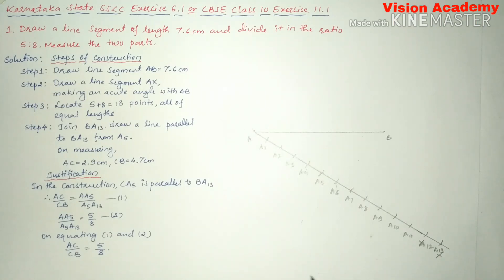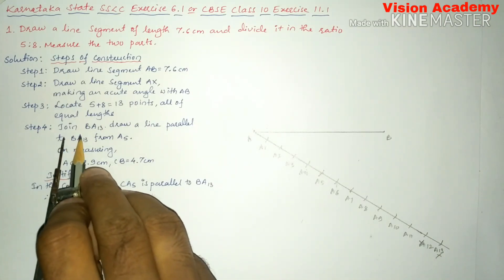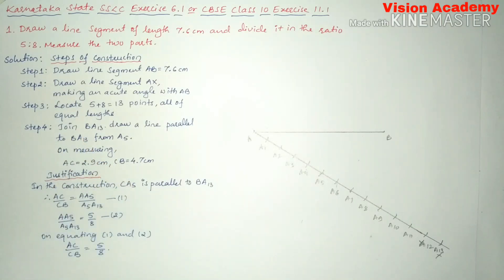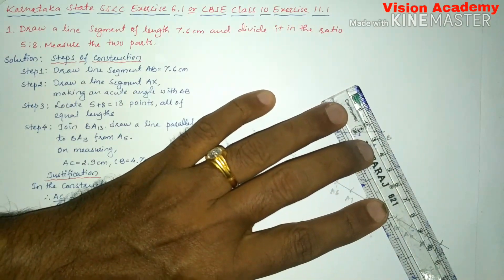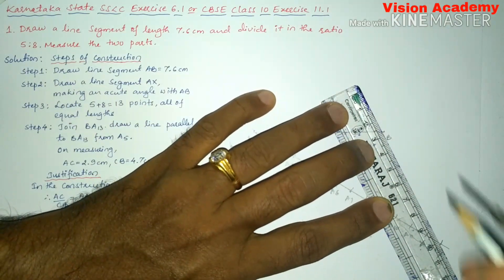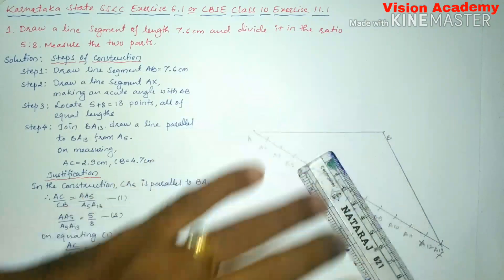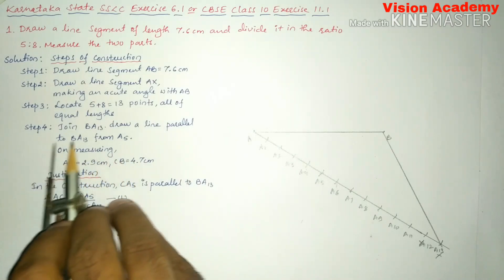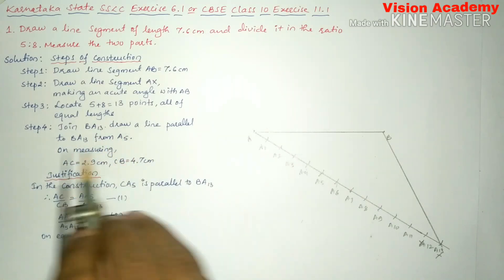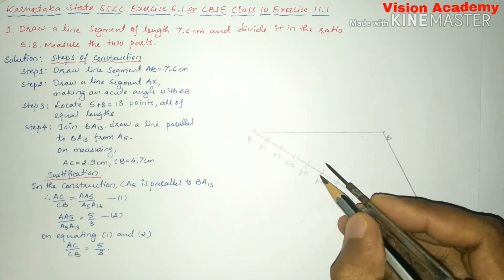Now we'll go for step four, join BA13. So here A13 and B. So let us join BA13. Next, draw a line parallel to BA13 from A5. So from A5, we have to draw a parallel line to BA13.